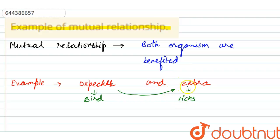So this zebra gets benefited as it is free from the ticks by the oxpecker, and this oxpecker is getting its food from the zebra. So they both are benefited mutually.